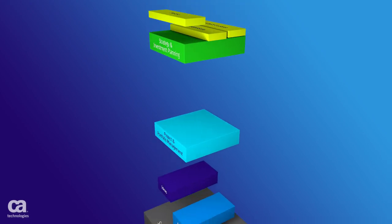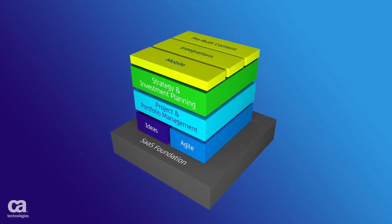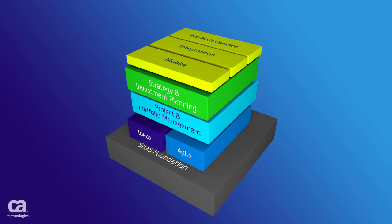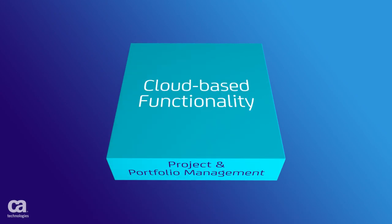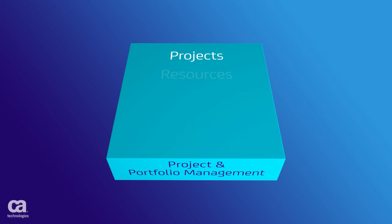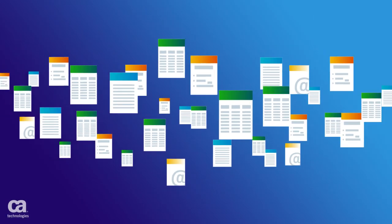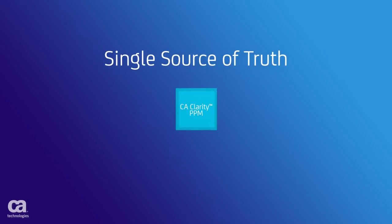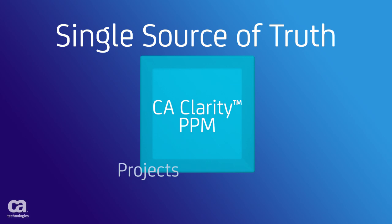The CA Clarity solution from CA Technologies is a fully integrated strategic planning and project and portfolio management solution. CA Clarity PPM On Demand's powerful cloud-based PPM functionality combines a rich set of project, resource, financial, and portfolio management features with built-in best practice content. It helps you to centralize your demand and projects and establish a single source of truth for greater visibility into ideas, requirements, and projects.